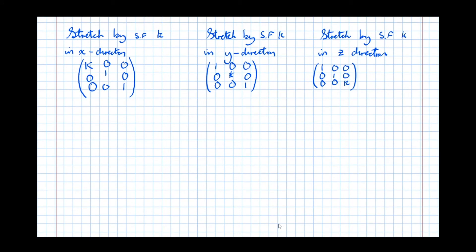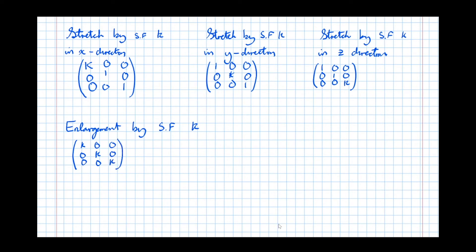Combining all three stretches together gives what's called an enlargement — a stretch in all three directions. An enlargement by scale factor K multiplies all X coordinates by K, all Y coordinates by K, and all Z coordinates by K.